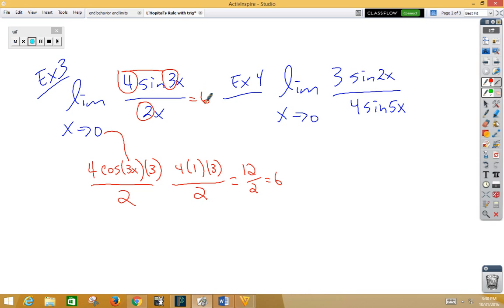In example 4, let's see if we can't find that shortcut. So on the top we have 3 times 2 is 6. On the bottom we have 4 times 5, which is 20, reduces to 3 tenths.